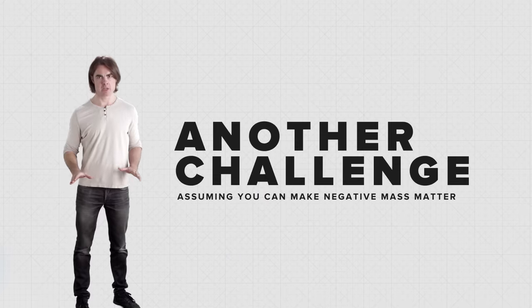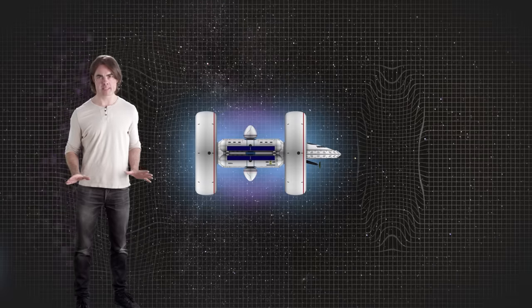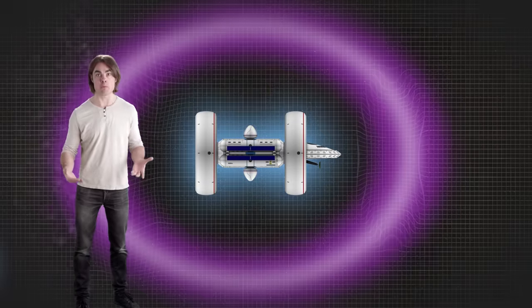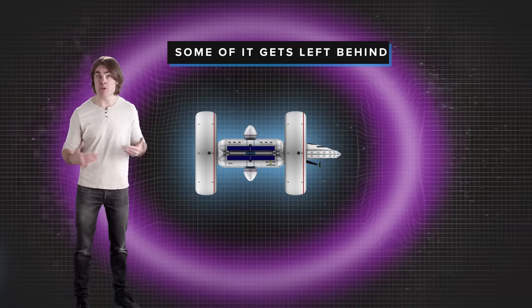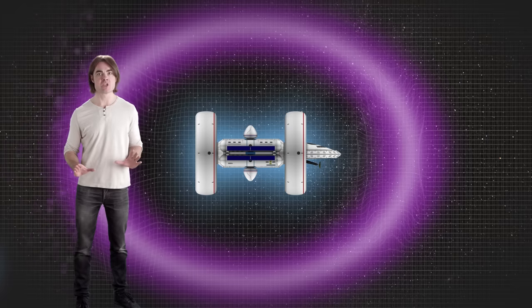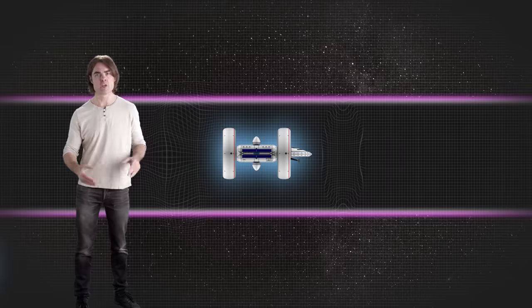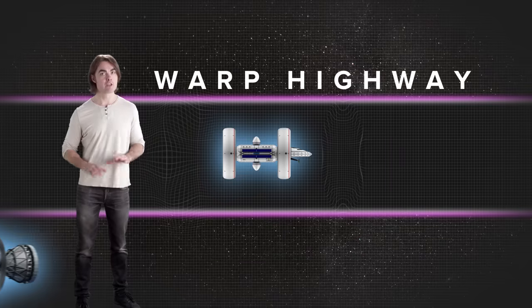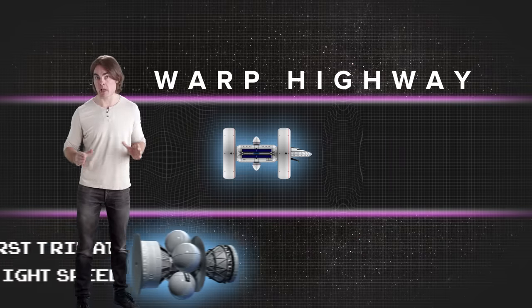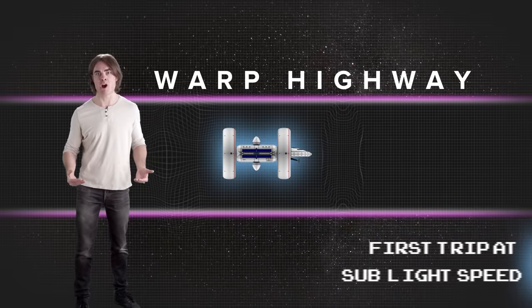Here's another challenge. Assuming that you can even make negative mass matter, to make a warp field, some of it would need to go outside the warp bubble, which means it gets left behind when you go to warp speed. There are some proposed solutions, one of which is to lay down the external negative energy conditions along the path before you leave, sort of like a warp highway. The first trip has to be made at sub-light speed, but I'm personally cool with the awesomeness of warp highways.